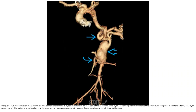CTA 3D reconstruction in a three-month-old with congenital anomaly and hypertension shows narrowing with dilatation of the abdominal aorta with involvement of the celiac trunk and SMA. The patient also had occlusion of the lower thoracic aorta with resultant formation of multiple collateral vessels.